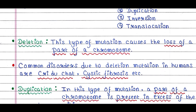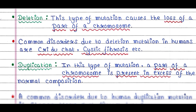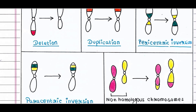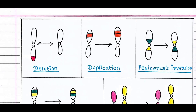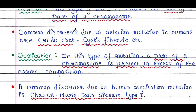First is deletion. This type of mutation causes the loss of a part of a chromosome. Looking at the figure, a part of the chromosome is deleted and the new chromosome doesn't have that part. Common disorders due to deletion mutation in humans are cri-du-chat and cystic fibrosis.